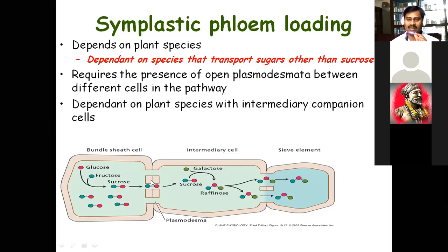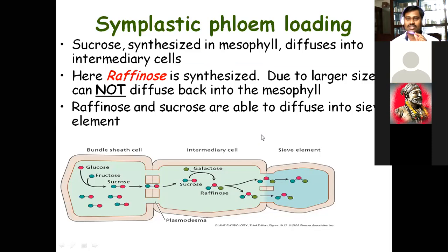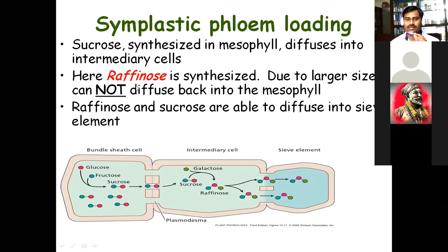The symplast movement of food requires open membrane pores — plasmodesmata — otherwise food cannot move. Some enzymes are synthesized for this. Larger-sized molecules cannot move through; so sucrose is synthesized in the mesophyll cell, diffuses into the intermediary cell, and is converted into raffinose. Raffinose has a larger size.